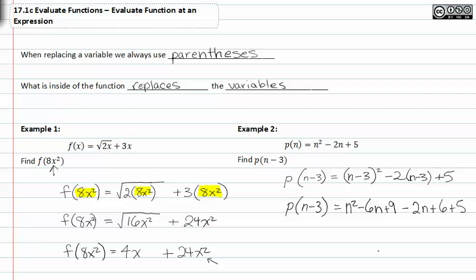Combining like terms I get n² minus 8n plus 20. So the function p(n-3) is equal to n² minus 8n plus 20.